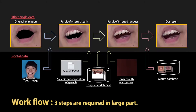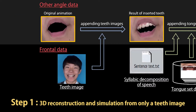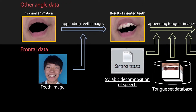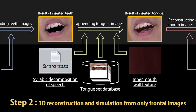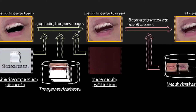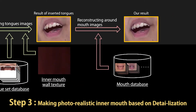Outline. Three steps are required in large part: 3D reconstruction and simulation from only a teeth image; 3D reconstruction and simulation from only frontal images; and making photorealistic inner mouth based on detailization.